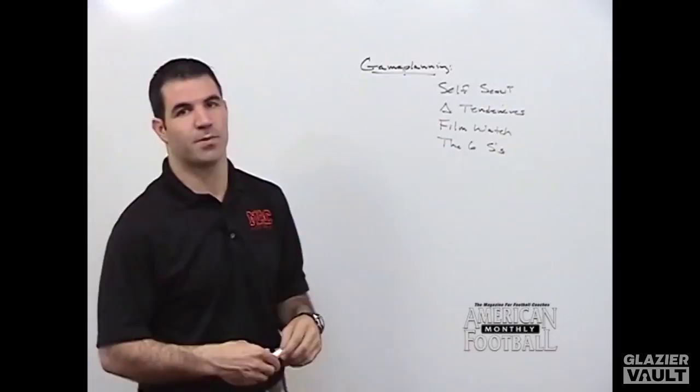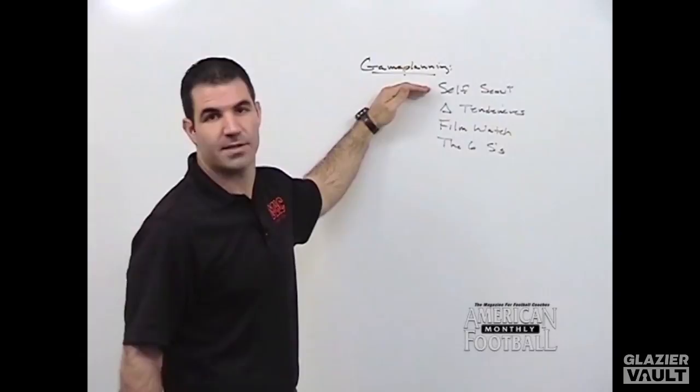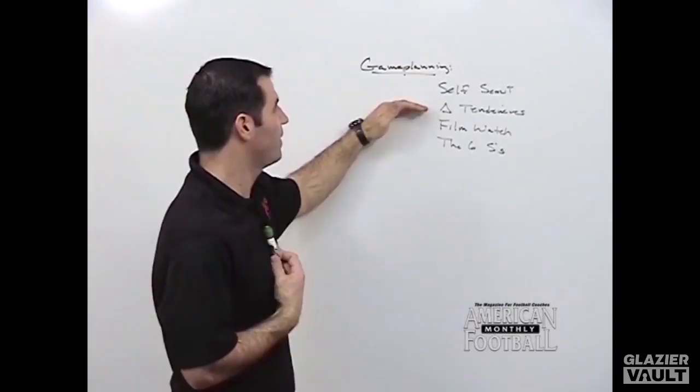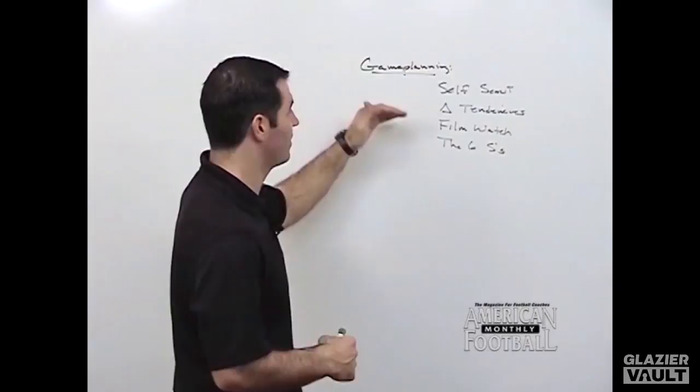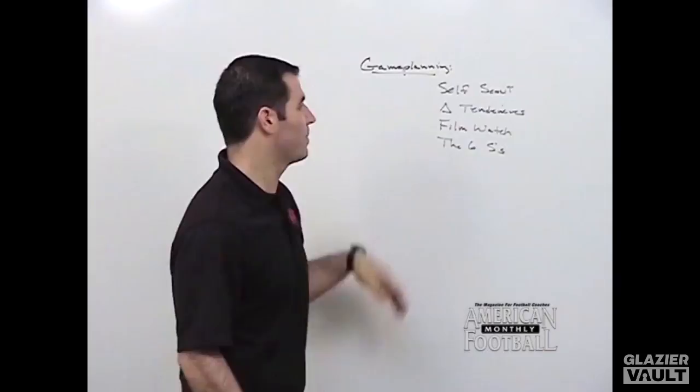When we start talking about offensive game planning, there's a couple points we're going to hit on and we'll go through each one in separate chapters on this tape. First thing we always want to look at is self scout. What are we doing? What are our tendencies? Second thing we want to look at are defensive tendencies. What are some things that they're doing that they might not even know by formation. Then we'll talk about our film watch, how we go through specifically into our film watch, and then we'll talk about the six S's of game planning.